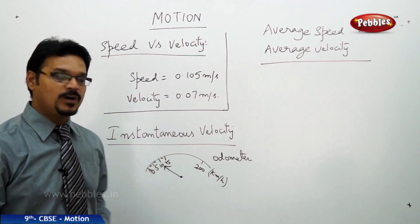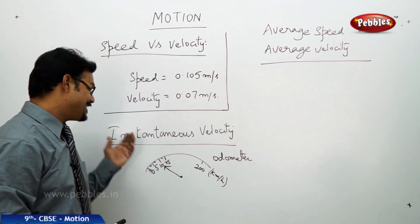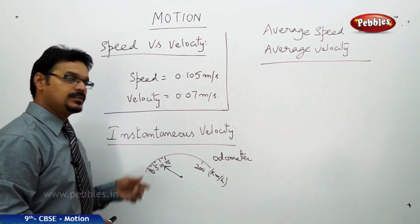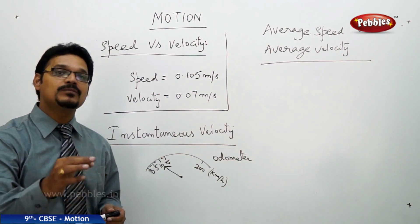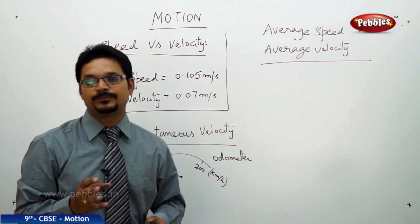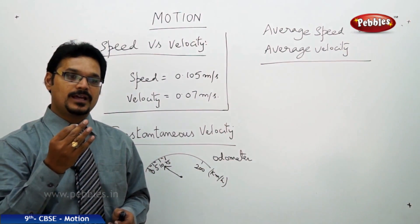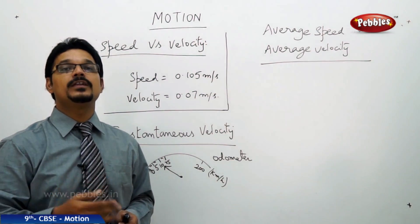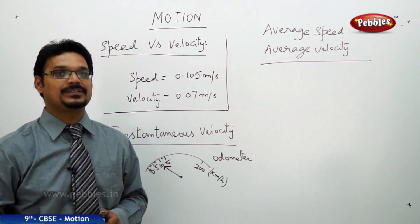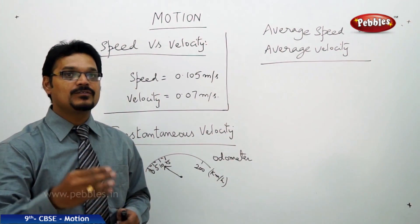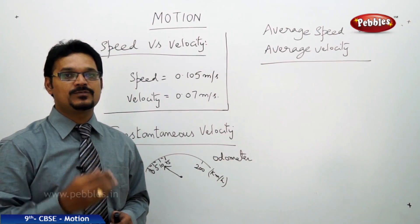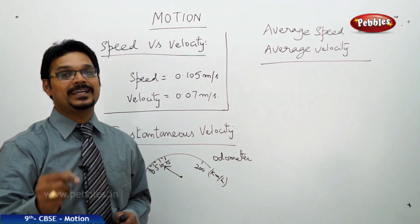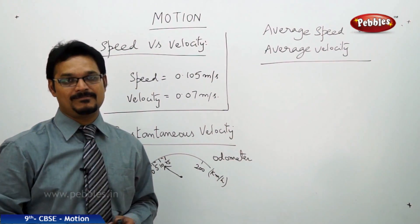Let's move on to the next concept: instantaneous velocity. What is instantaneous velocity? 'Instant' means at that moment. For example, if I say I have done this work at the 4th second — that means at that specific moment, the 4th second — that is instantaneous.